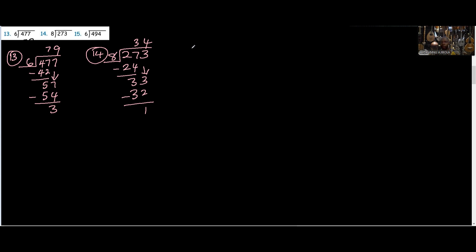Now number 15. We have 4, 9, 4. Divide by 6. So that's going to be... 6 can go in... So 6 and 49 is how many? That's 8. 6 times 8 is 48. We have 1. 6 and 14 is how many? 2 times 6 is 12. There you have remainder 2. Is that clear? Yeah.